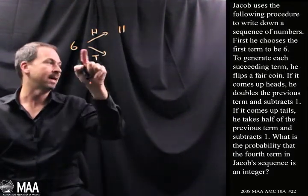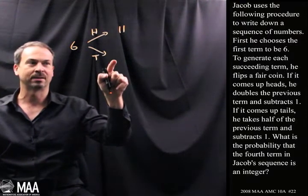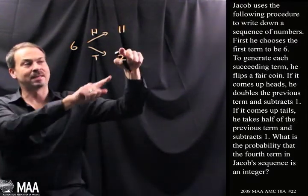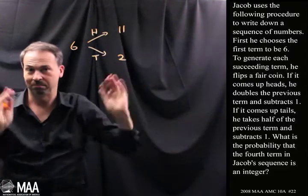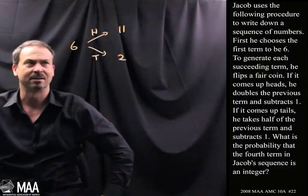And if he gets a tail, it'll be half it, and subtract 1. Half of 6 is 3, so whichever one is 2. Alright, so the second number in sequence is either 2 or 11. They're both integers. Maybe everything stays integers.